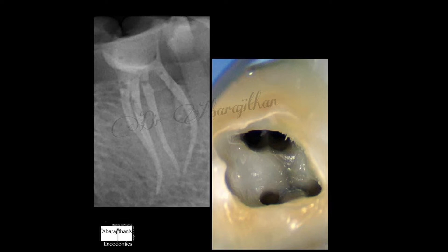When there is a possibility of a second canal, the clinical presentation is that the distal canals are not centered between the two mesial canals — you will find one orifice slightly offset and the other canal orifice on the opposite side. The incidence of a mandibular first molar having two distal canals is almost 30%, meaning one out of every three mandibular first molars has a possibility of a second distal canal.